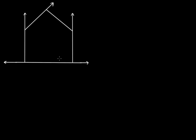We have a pentagon here. Let's quickly name the vertices: this is A, this is B, let this be C, D and E. Let's quickly name the internal angles: this is angle 1, 2, 3, 4, and let this be 5.